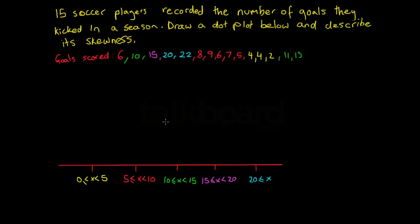Hey guys, so in this video we're going to be having a look at some dot plots and also we're going to be checking out describing skewness. So I've got this question here — it says 15 soccer players recorded the number of goals they kicked in a season. Draw a dot plot below and describe its skewness.